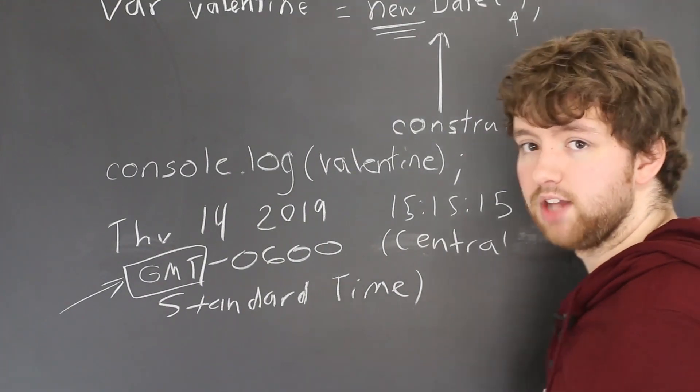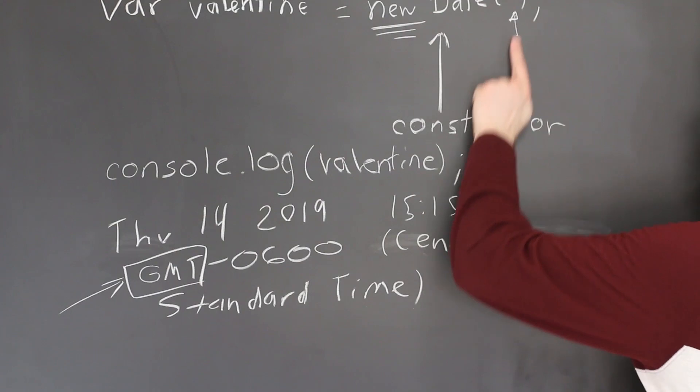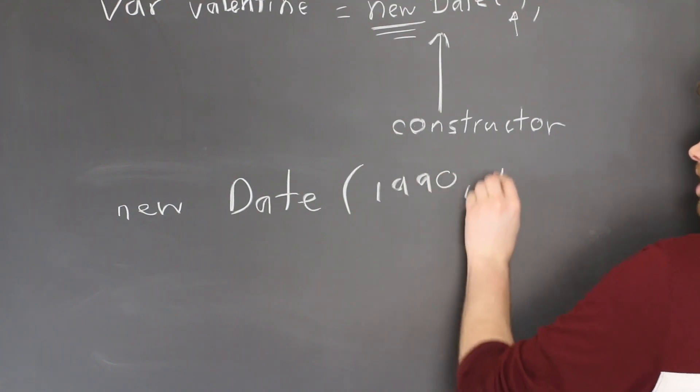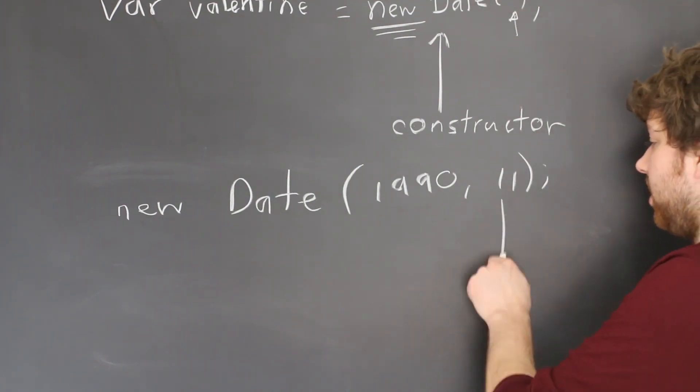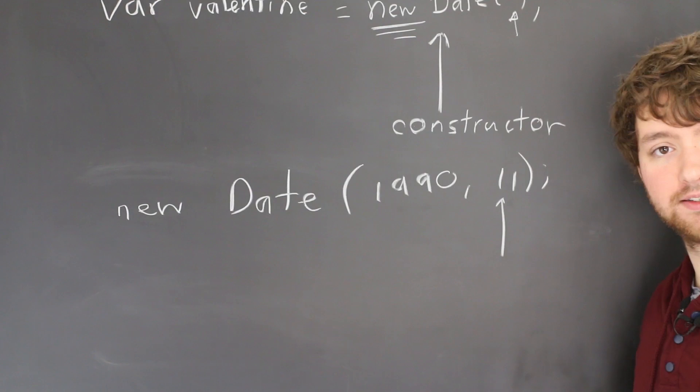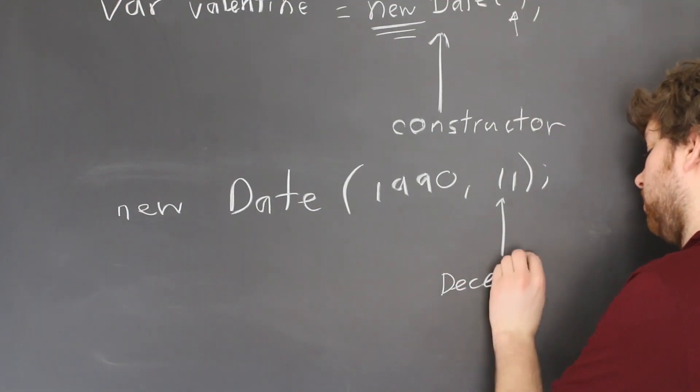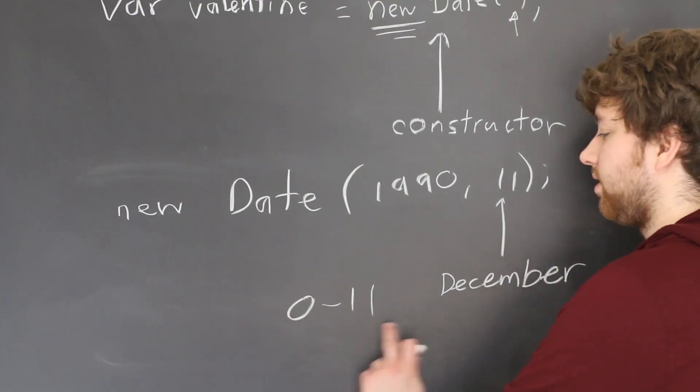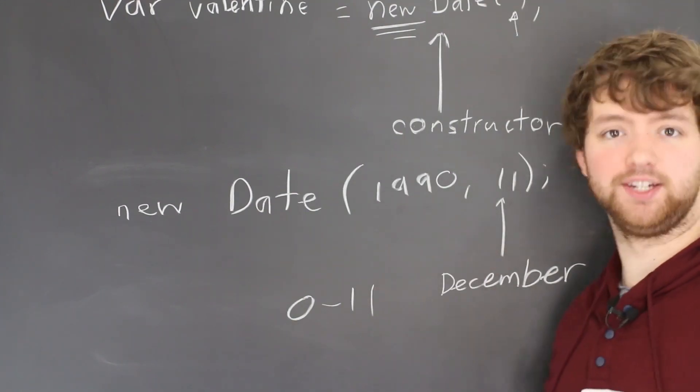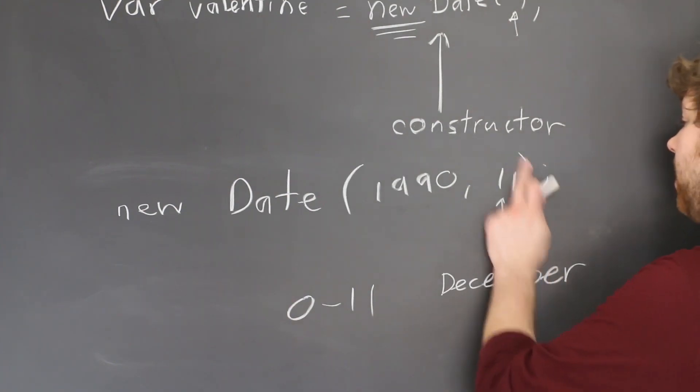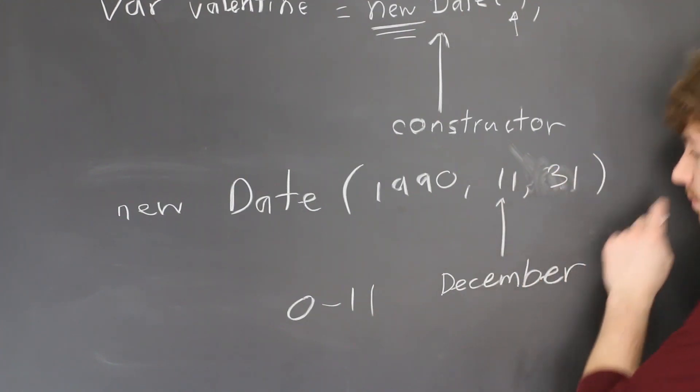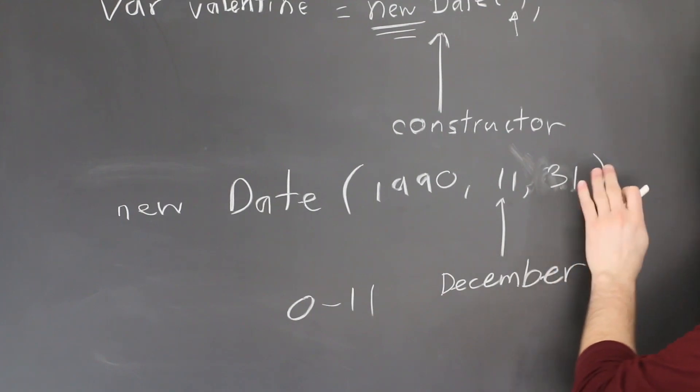Now, if you want to be specific on a date and not just get the date of right now, you can pass information into this constructor to define what date you want. So the bare minimum is the year and the month. So for example, we could say 1990 month 11, but there's a gotcha you need to know about. This is the month, but it's zero based, meaning this is actually December. So the months go from zero to 11. The zero based thing is not the case for the year. So 1990 is actually 1990. Same for the day. If you go in here and add another argument, you could say December 31st, for example, like so. That is also not zero based. So 31 is day 31.